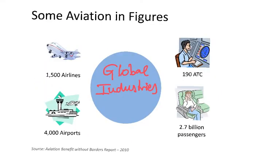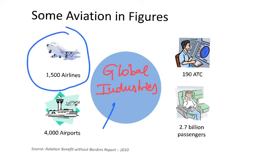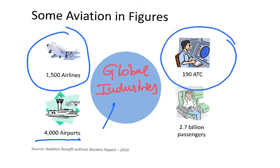The aviation industry is a very global industry. Let me introduce some figures. We have about 1,500 airlines worldwide and more than 4,000 airports. There are almost around 200 air traffic control centers, and about 50% of the world's population, which means around 3 billion passengers.